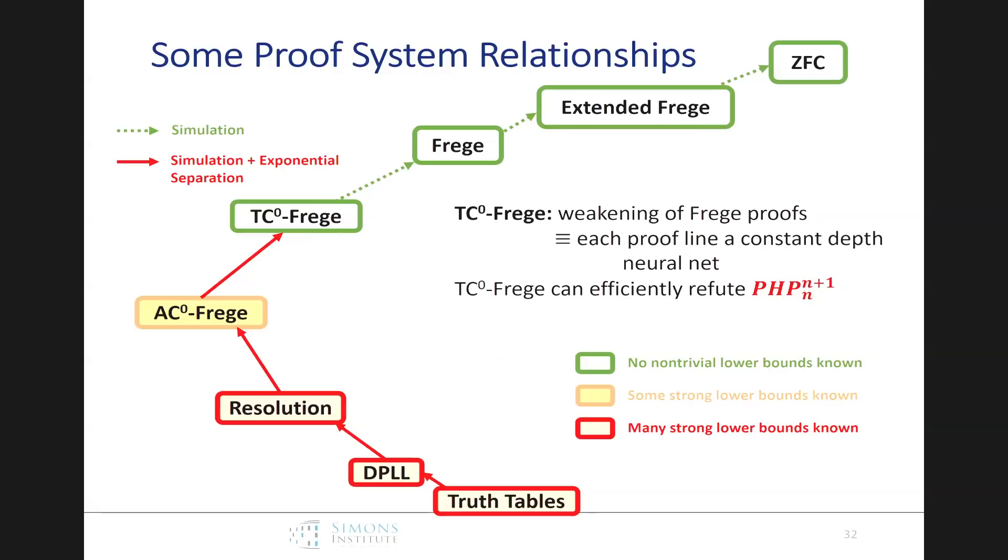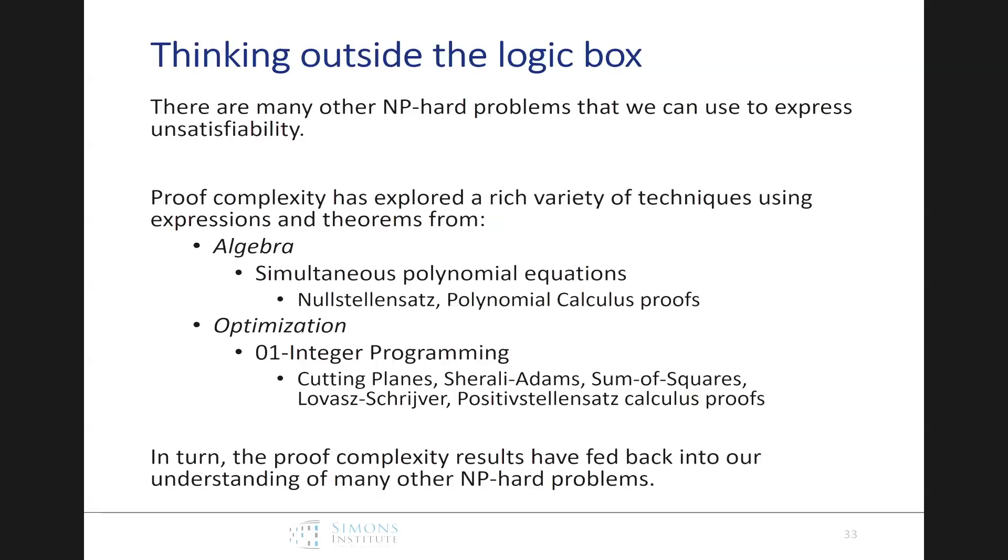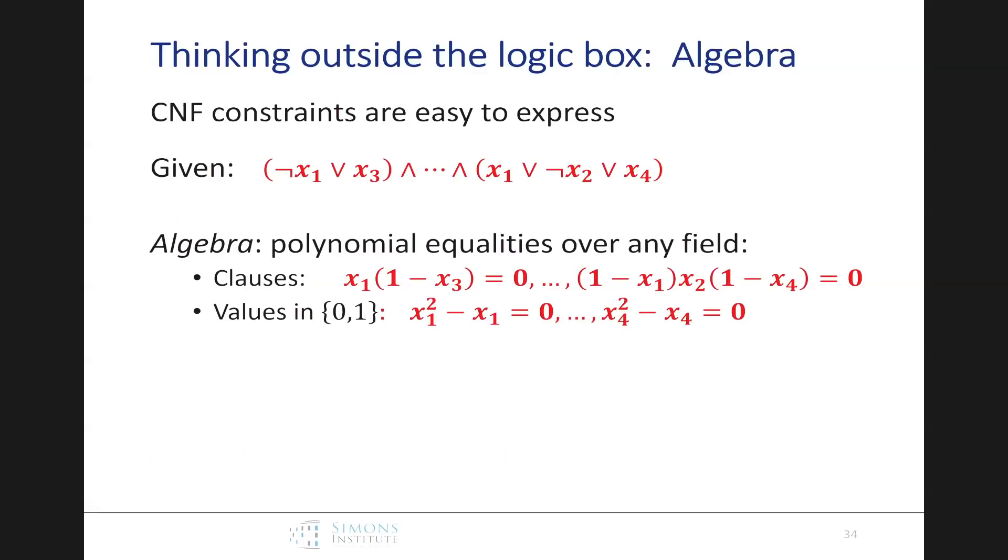Well, let's think outside the logic box. There are many other NP-hard problems that we can use to express the problem of unsatisfiability. That's one of the nice things about the completeness of SAT, or equivalently the completeness of unsat. So, proof complexity, a lot of the work over the last couple decades, has been exploring a rich variety of techniques using expressions and theorems from algebra and from optimization. And we'll go through some of these proof systems. And one of the nice consequences, in turn, the proof complexity results have actually fed back into our understanding of these other NP-hard problems. So, let's start with algebra. Well, in algebra, we can take these clauses, and this is where CNF is especially nice. We start with clauses, and we can convert them to polynomials.